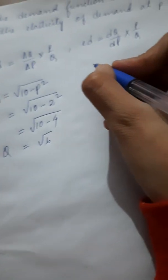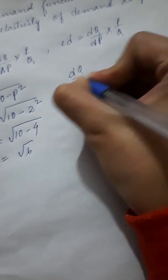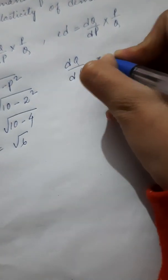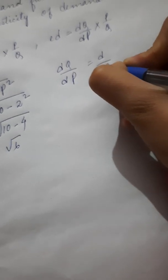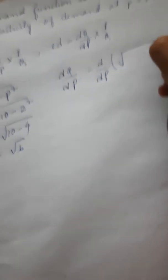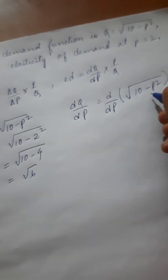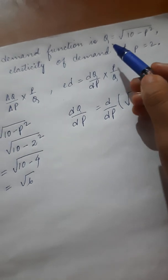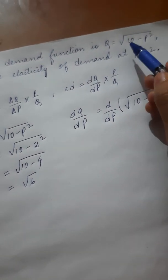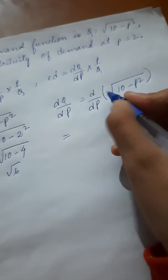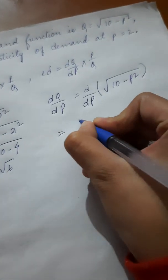Now we will find dq by dp. q is given as root 10 minus p squared. Here we have written the value of q which is already given in the question, that is root 10 minus p squared. Now, we need to differentiate this.